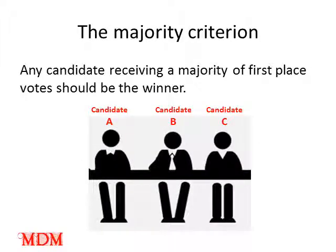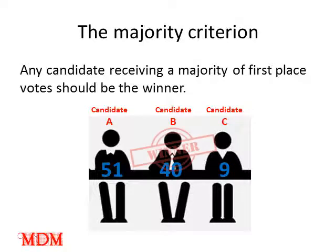First, let's look at the majority criterion: any candidate receiving a majority of first-place votes should be the winner. In other words, it would seem unfair if candidate A got 51 first-place votes, candidate B got 40 first-place votes, and candidate C got nine first-place votes out of 100 votes in all, but candidate B was declared the winner of the election. Such an outcome would violate the majority criterion.